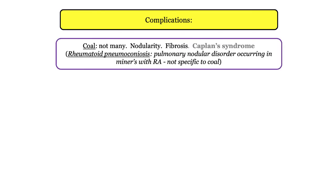Starting with coal: the complications are nil — nodularity and fibrosis, no real action. I'll toss in the low-yield definition of Caplan syndrome: simply defined as a pulmonary nodular disorder occurring in miners with rheumatoid arthritis. Dr. Caplan was a heavy in the field of occupational lung injury.